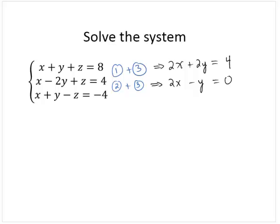So now I've taken a system of 3 equations and turned it into a system of 2 equations in x and y. Now, I have 2x plus 2y equals 4 and 2x minus y equals 0.